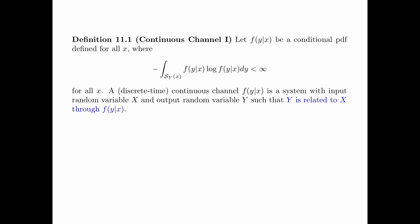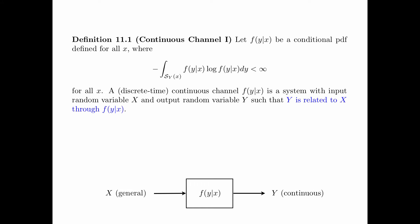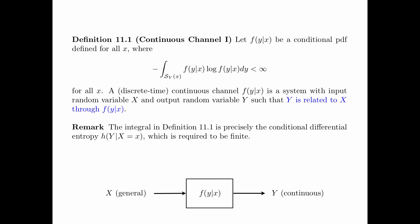A discrete time continuous channel f(y|x) is a system with input random variable x and output random variable y, such that y is related to x through f(y|x). This is illustrated in the figure. Here, x can have a general distribution, and y always has a continuous distribution. Note that the integral above is precisely the conditional differential entropy h(y|x = x), and this conditional differential entropy is required to be finite for all x.